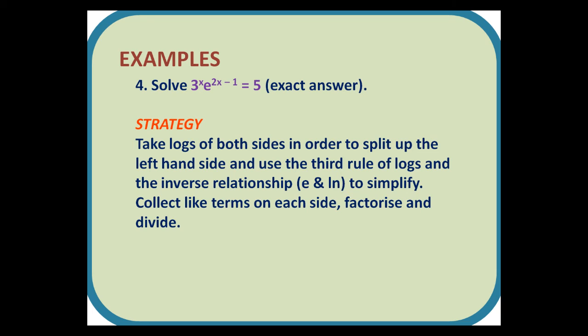Question 4: Solve 3^x × e^(2x - 1) = 5, giving an exact answer. Strategy: Take logs of both sides in order to split up the left-hand side, and use the third rule of logs and the inverse relationship between e and ln to simplify. Collect like terms on each side, factorize and divide.